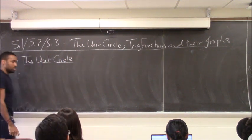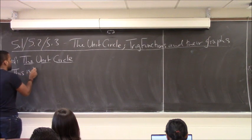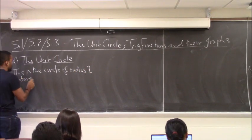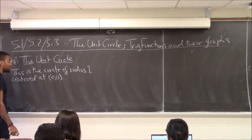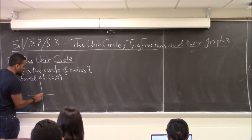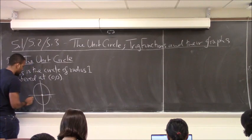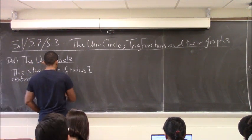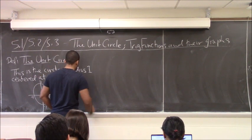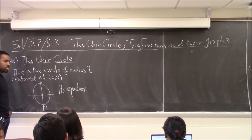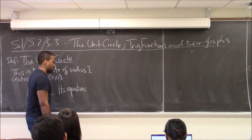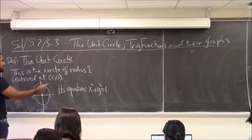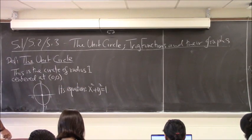What is the unit circle? It's the circle of radius 1 centered at the origin. Whenever someone refers to the unit circle, they're talking about that specifically — center at the origin, radius of 1. Its equation is x squared plus y squared equals 1, because the general circle equation is x minus h squared plus y minus k squared equals r squared.